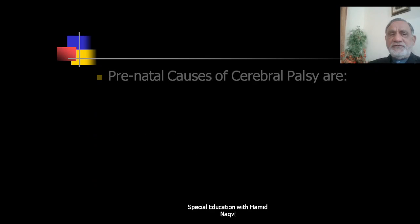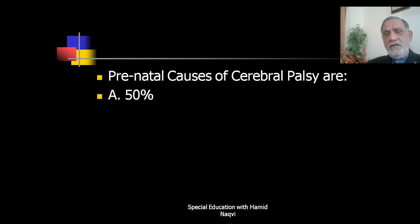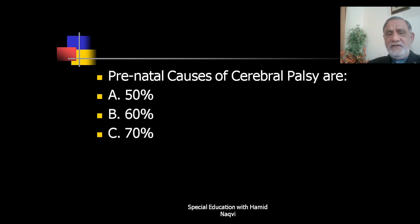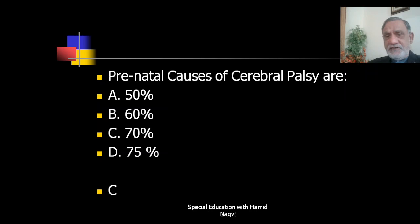Next question: Prenatal causes of cerebral palsy account for what percentage — 50%, 60%, 70%, or 75%? The correct answer is C — prenatal causes of cerebral palsy account for around 70% of all cases.